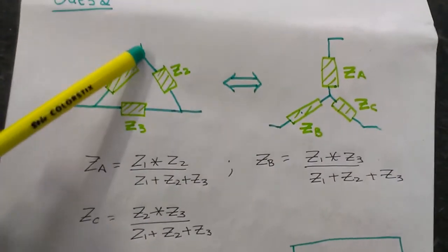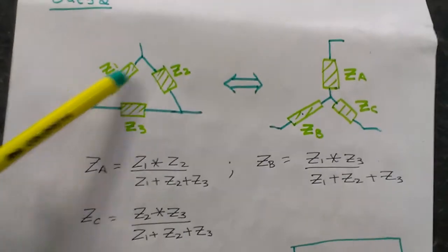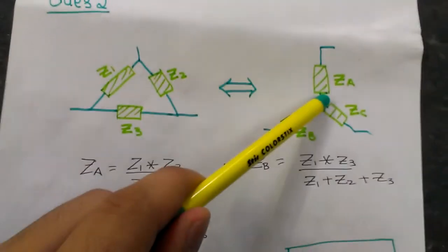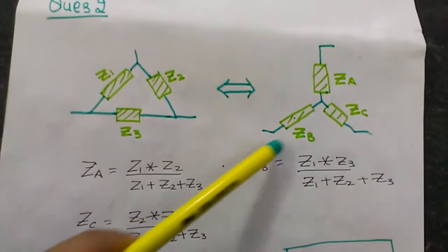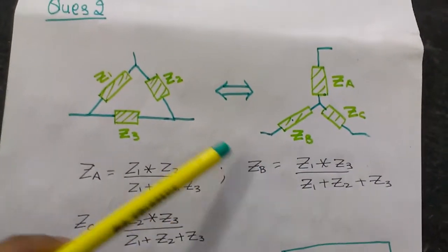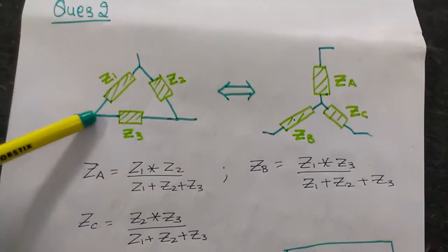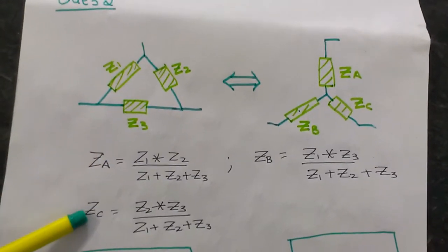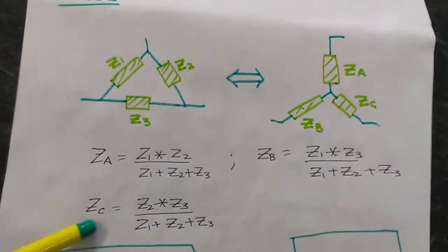Again, ZB equals Z1 times Z3 divided by the sum of these three impedances. Likewise, same goes for ZC. So this is how you convert a Delta into a star.